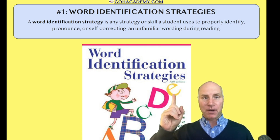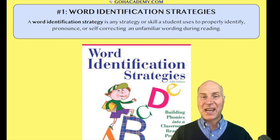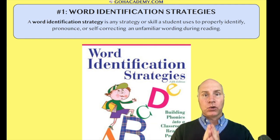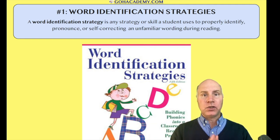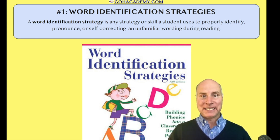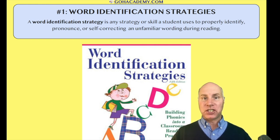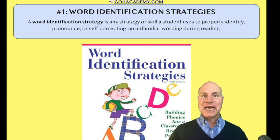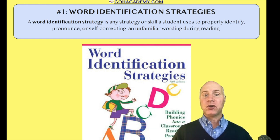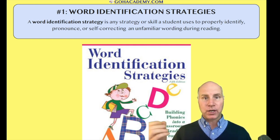There's a definition up above. Basically, a word identification strategy is any strategy or skill a student uses to help identify and pronounce a word correctly in a text, or self-correct a miscue. It doesn't necessarily mean they're using it to comprehend what they're reading — it just means they're using it to identify, pronounce, or self-correct that miscue or word in the text.